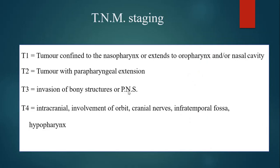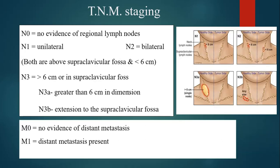In TNM staging, T1 is tumor confined to the nasopharynx or extending to the oropharynx or nasal cavity. T2 is tumor with parapharyngeal extension. T3 is invasion of bony structures or paranasal sinuses. T4 involves the brain, orbit, cranial nerve, infratemporal fossa, or hypopharynx. N0 is no regional lymph node involvement. N1 is unilateral and N2 is bilateral, both above the supraclavicular fossa and less than 6 cm in diameter. If the node is more than 6 cm, it is N3. M0 is no distant metastasis and M1 indicates distant metastasis.